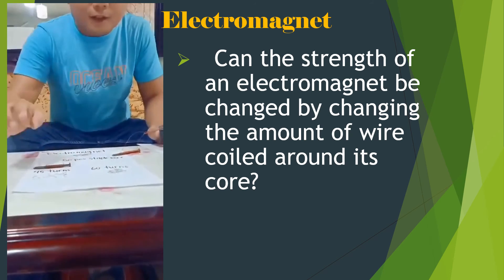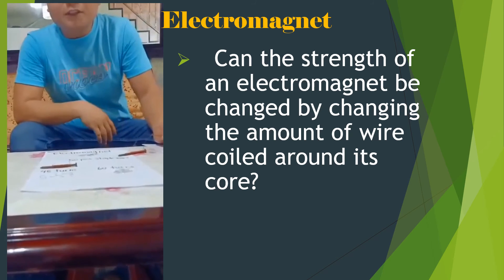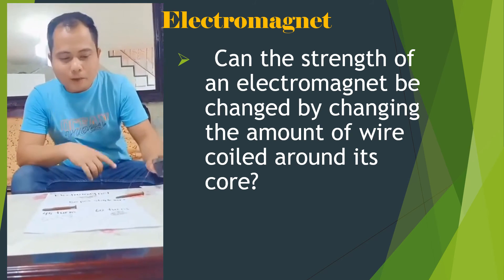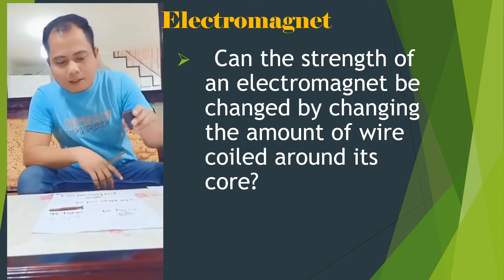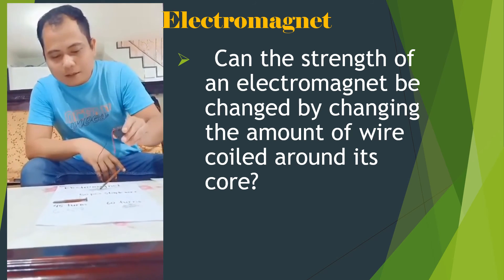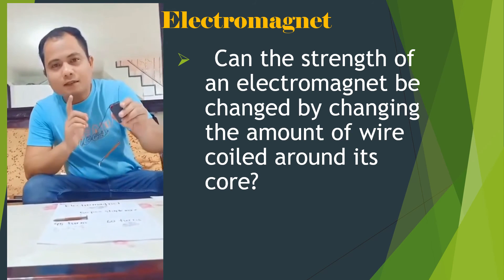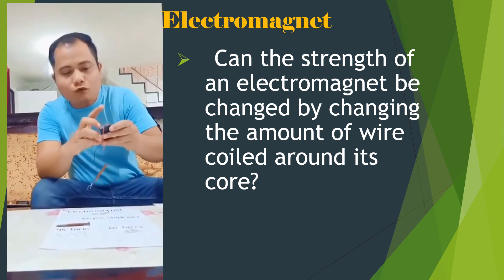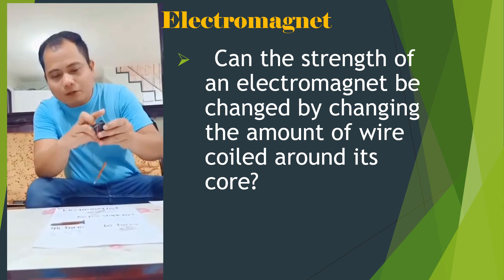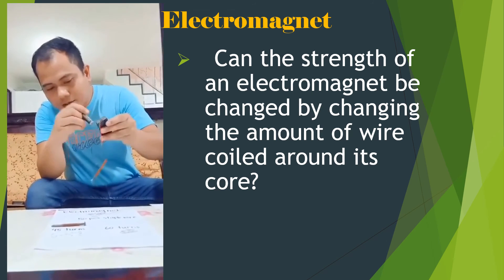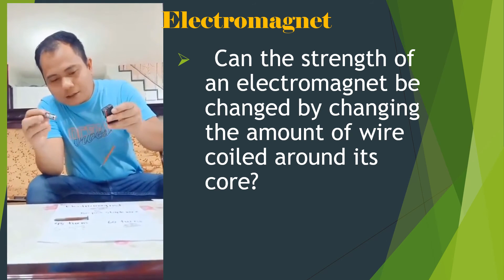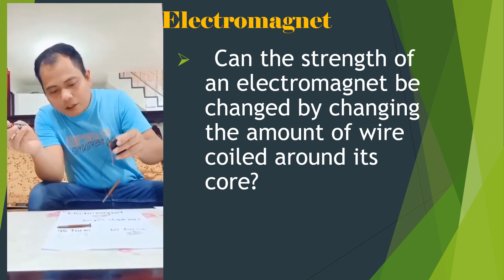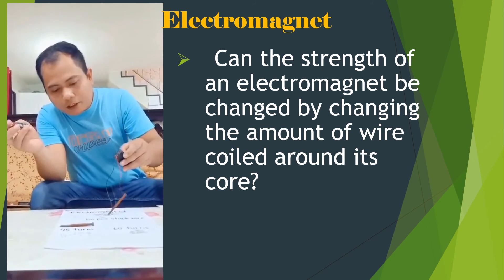The more turns, the stronger the electromagnet. Remember that an electromagnet is just a temporary magnet, because when you remove the battery or source, the nail or wire no longer acts as a magnet.